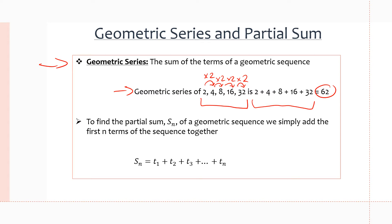To find the partial sum of a geometric sequence we just add the first n terms of the sequence, just like we did with arithmetic sequences. Here's the blueprint: S(n) — we show partial sum with a big S with a subscript, and the subscript shows us what term we're going to. So S(n) equals t1 + t2 + t3 + t4 and so on, up to the nth term.